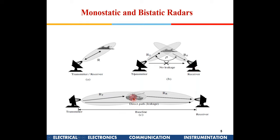Bi-static radars cannot easily detect targets that don't have enough elevation angle, because the direct energy from the transmitter can enter the receiver when the elevation is very low, causing errors. They work better for high-flying objects. These are the two types of radars.